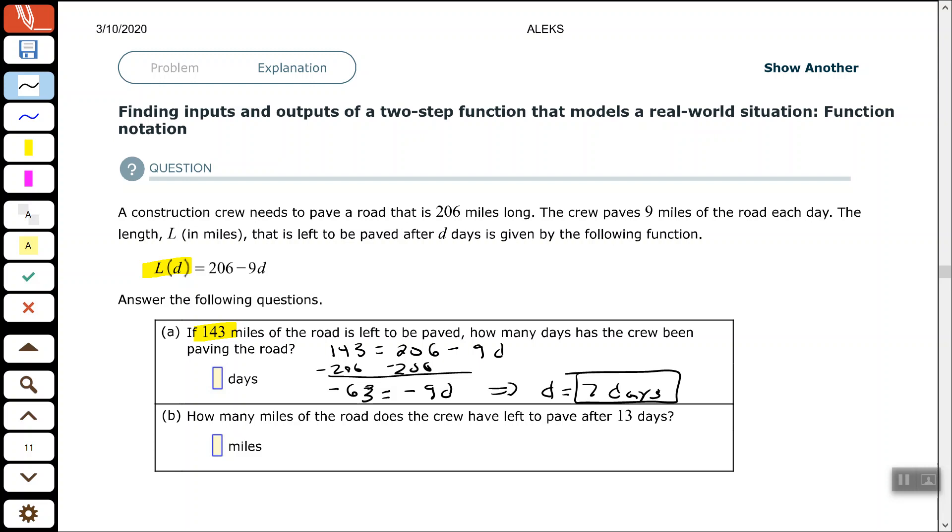Now we're looking at Part B. How many miles of the road does the crew have left to pave after 13 days? So they give us 13 days. They give us what to put in for the variable D.